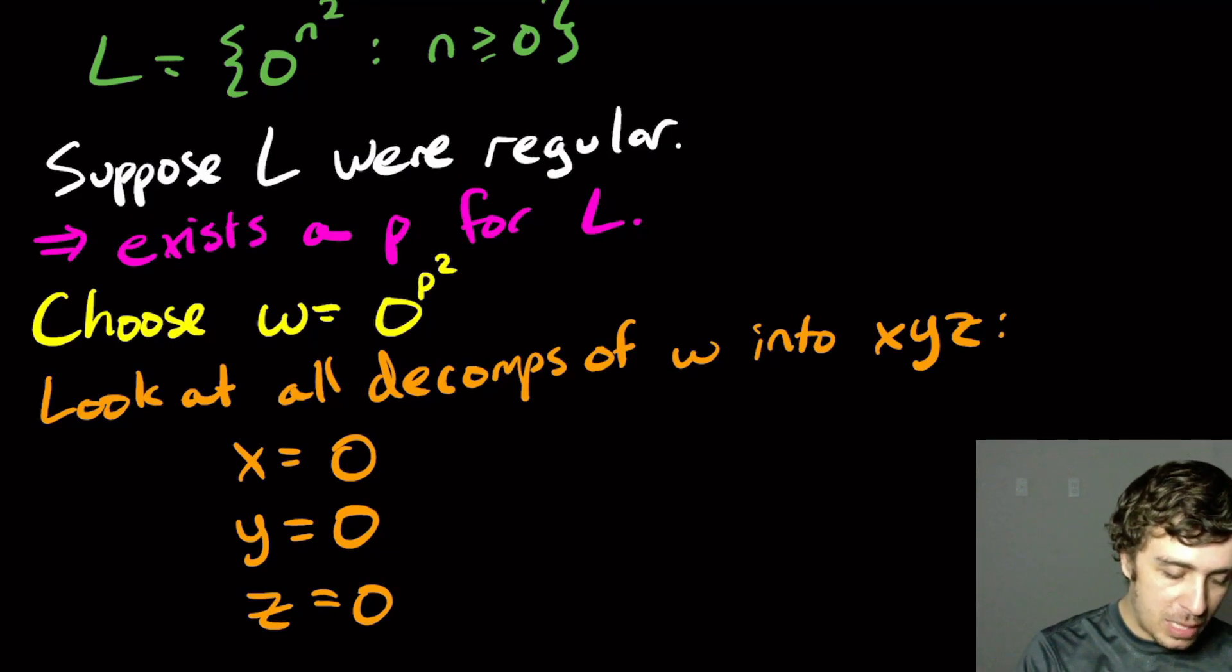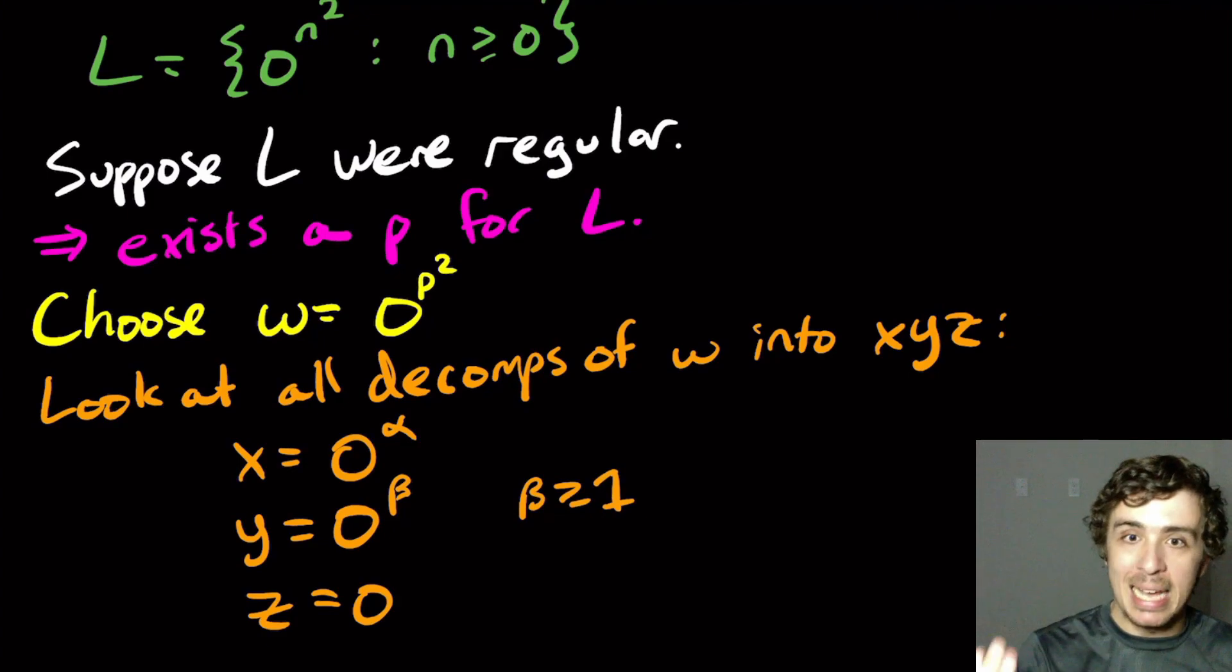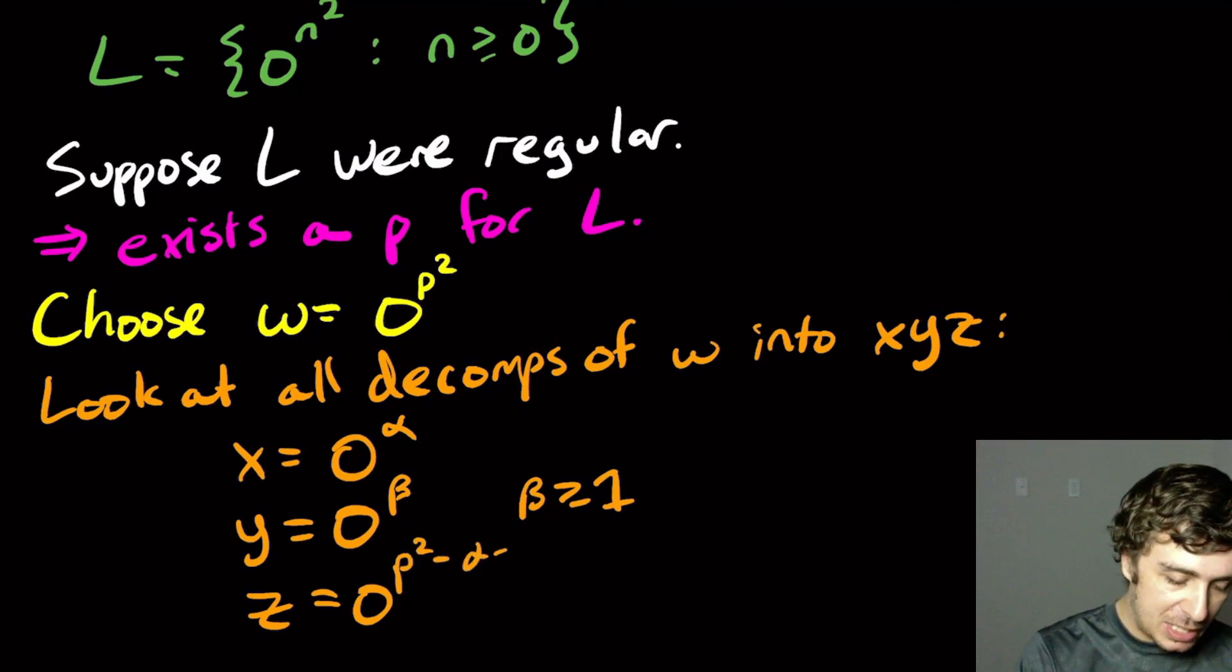Let's call the x part alpha number of zeros. Y is a beta number of zeros, where we know beta is at least one, because y has to be non-empty. And then the z part is p squared minus alpha minus beta.